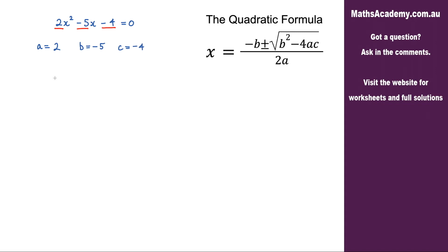I can now perform the substitution step. So x is minus b, and b is negative 5, so we put that in brackets, negative 5, plus or minus the square root of b squared, so negative 5 squared, minus 4 multiplied by a which is 2, multiplied by c which is negative 4. Now that's all over 2a, so 2 multiplied by 2.